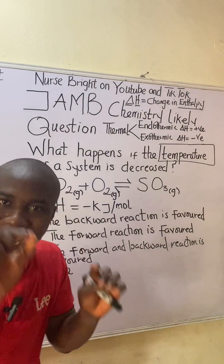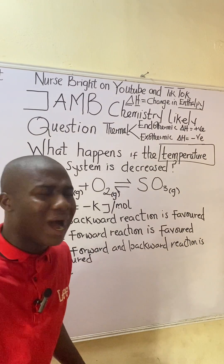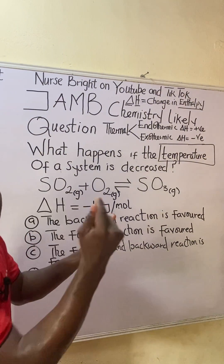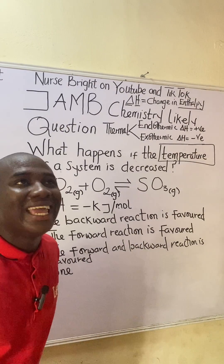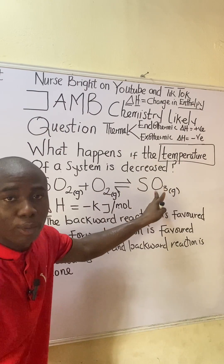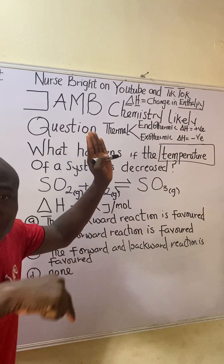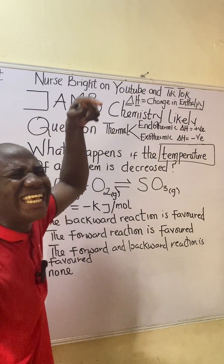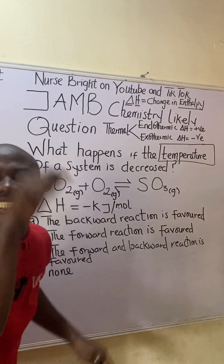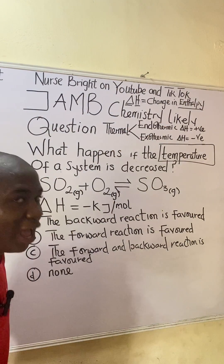For exothermic reactions, everything is the direct opposite of endothermic. For an exothermic reaction, if you increase temperature it favors the backward reaction; if you decrease temperature it favors the forward reaction. The question asks what happens when the temperature of the system is decreased. Since this is an exothermic reaction, decreasing the temperature favors the forward reaction — so the forward reaction is favored.